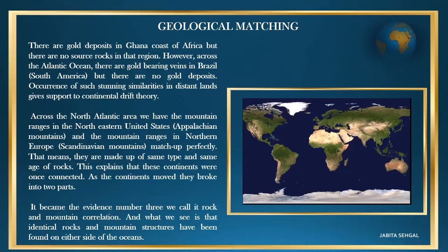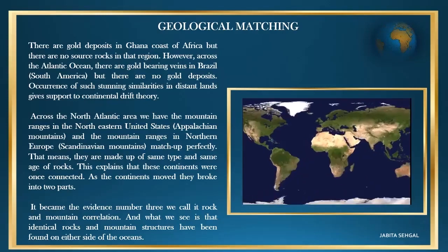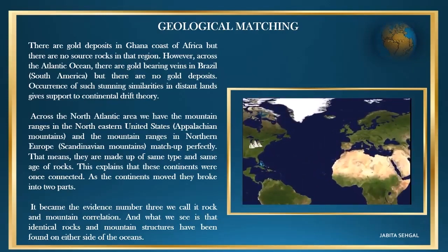Next is geological matching. There are gold deposits on the Ghana coast of Africa, but there are no source rocks in that region. However, across the Atlantic Ocean, there are gold-bearing veins in Brazil, but there are no gold deposits there. The occurrence of such stunning similarities in distant lands gives support to the continental drift theory. Another example: across the North Atlantic, we have mountain ranges in the northeastern United States that match the mountain ranges in Northern Europe — both are made up of the same type and age of rocks. This explains that these continents were once connected.